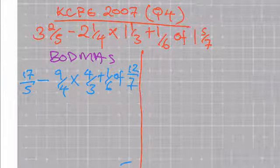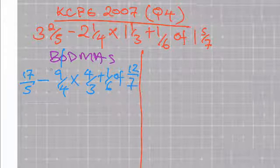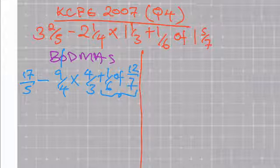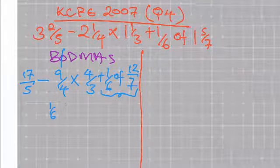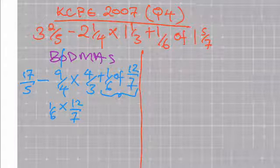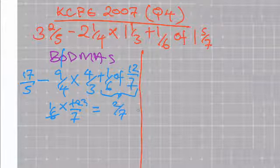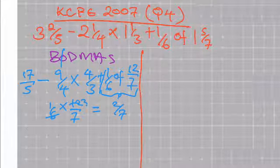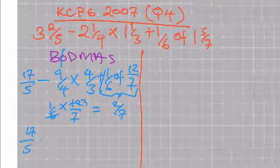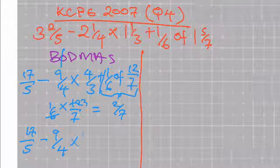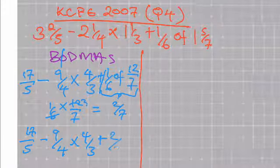Once you are there, we begin by applying BODMAS. We have 'of' coming first — remember we don't have brackets in our question, so we start with 'of', which means multiplication. That means I will have 1 over 6 multiplied by 12 over 7. So 6 goes into 12 twice, leaving an answer of 2 over 7. My question has been reduced to 17 over 5 minus 9 over 4 multiplied by 4 over 3 plus 2 over 7.